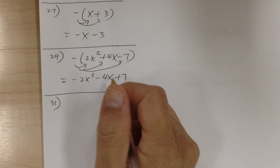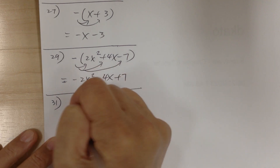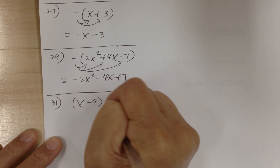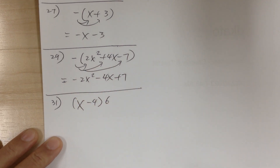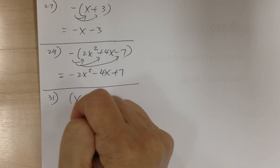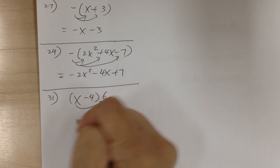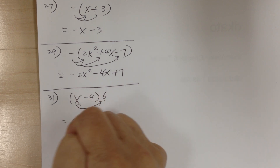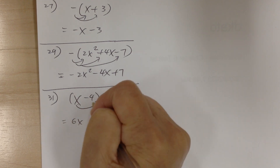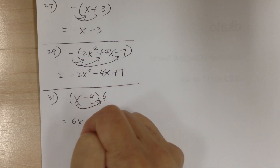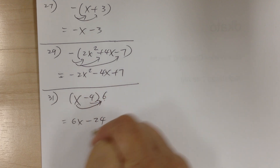Number 31. You have (x minus 4) times 6. This is kind of a backward distribution, but you do exactly the same thing — distribute. So x times 6 is 6x, and then negative 4 times 6 is minus 24.